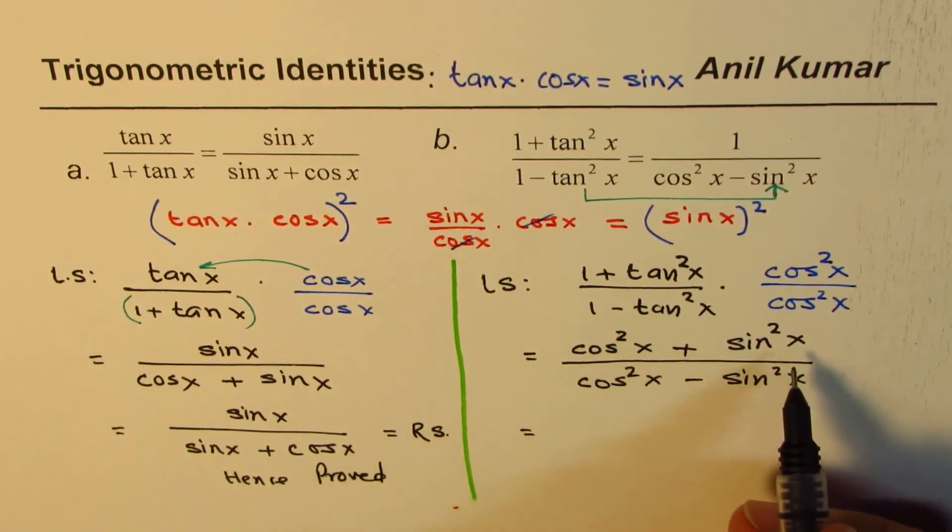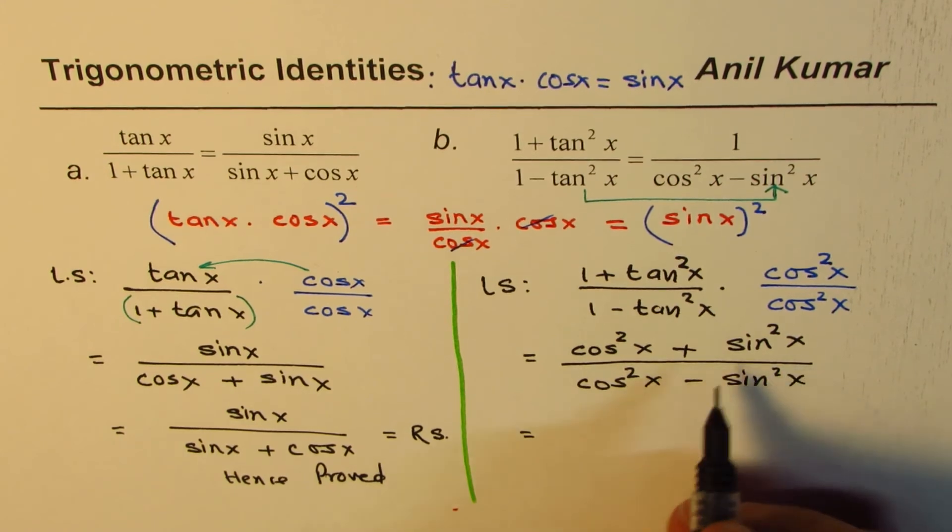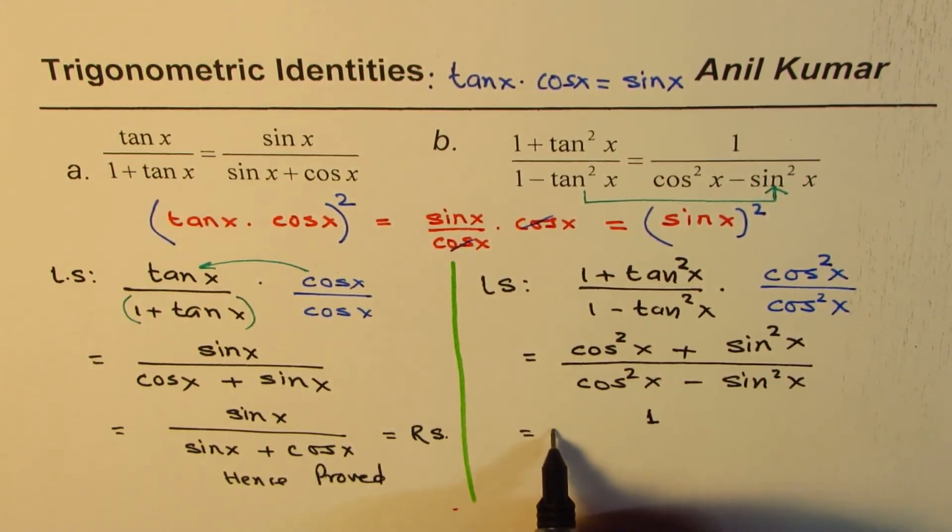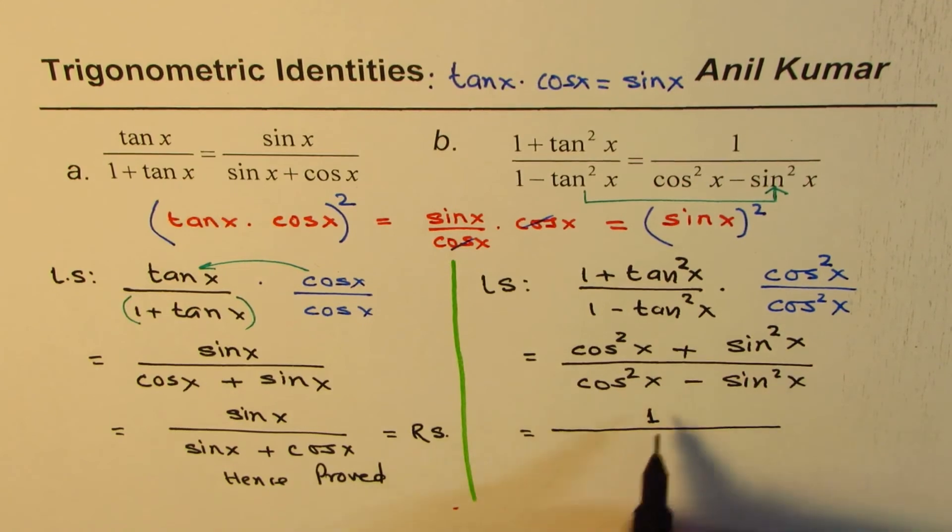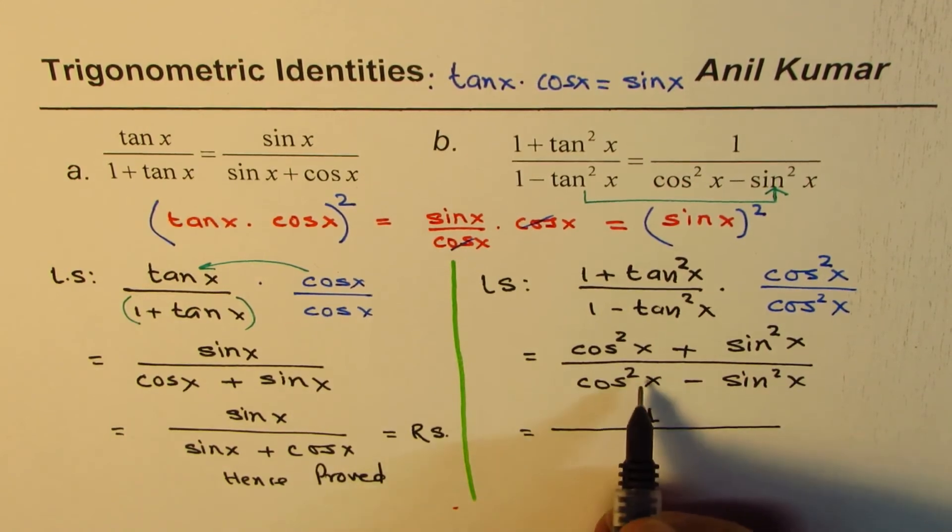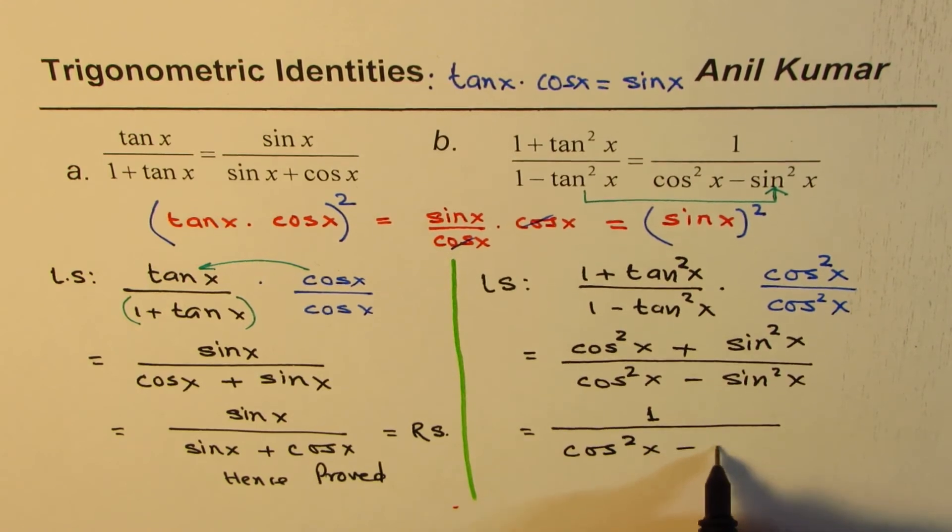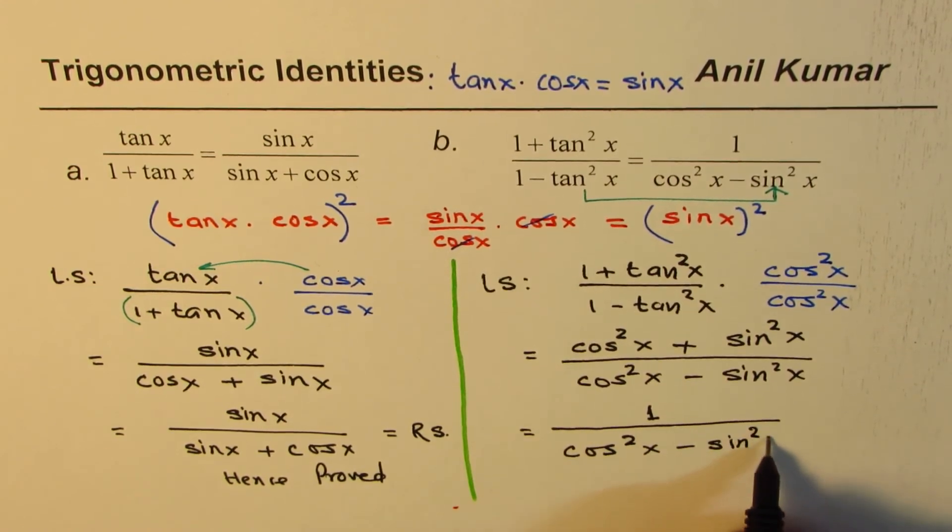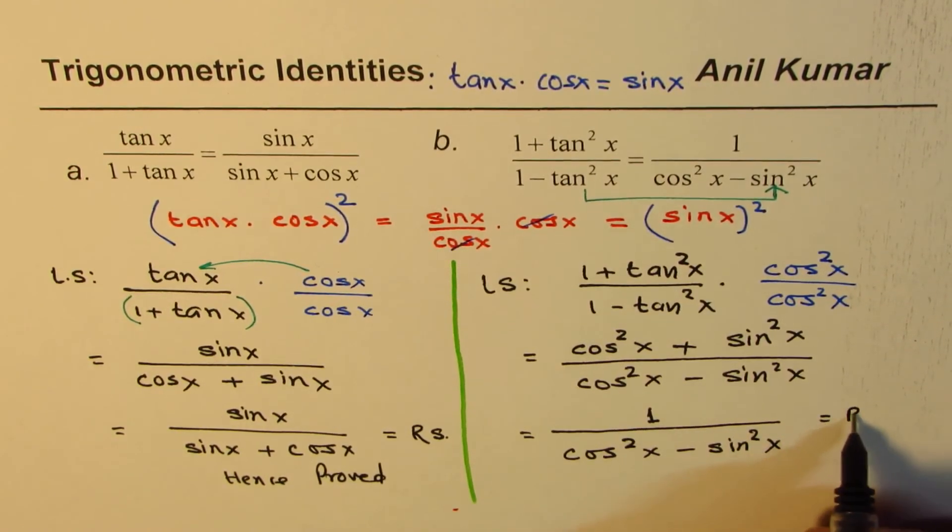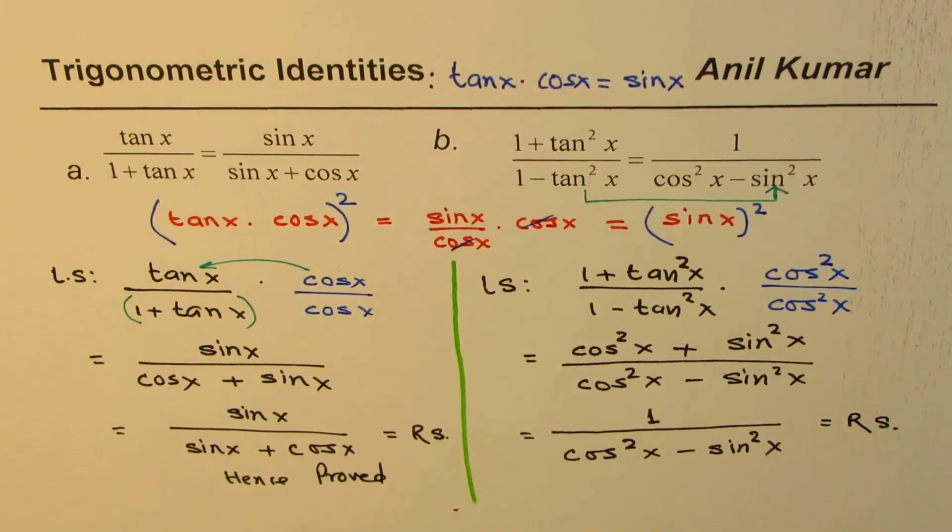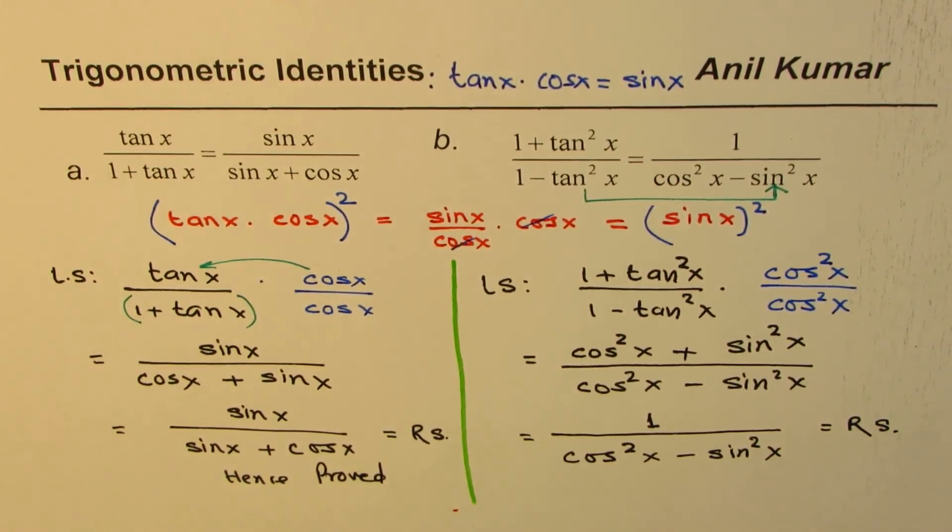Now, what is cos square x plus sin square x? That's the Pythagorean identity, right? The fundamental Pythagorean identity equals to 1, and the denominator here is cos square x minus sin square x. And that is what we require, right? That is the right side. So, it becomes that simple.